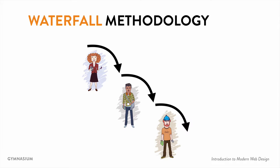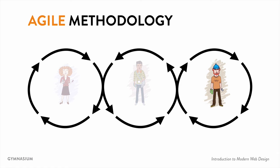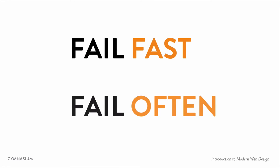An alternate approach to working together as a team is what's called agile methodology. Basically, agile means that you're iterating and working together. Rather than one person doing their task, finishing it, and handing it to the next person, the different people on the team actually work together and iterate on a given page, interface, or problem in order to figure out the best solution. That iteration happens over and over again. Along with this methodology, you'll often hear terms like 'fail fast' and 'fail often,' because it's through failing that we learn from our mistakes and then adapt.